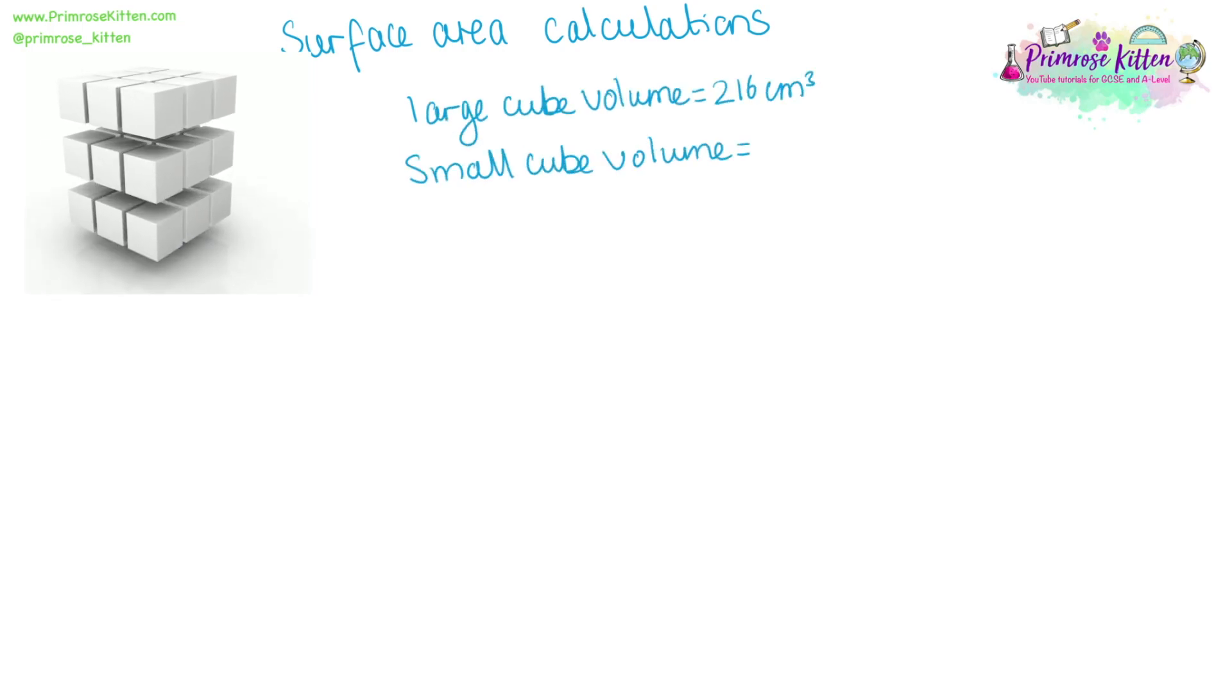Following on from that, we need to know surface area calculations as well. Just to remind ourselves, the large cube had a volume of 216 centimetres cubed, the small cube had a volume of eight centimetres cubed. When we think about a cube, if we lay it out flat, you can see that one cube actually has six faces each, and we need to use that and remember that in our calculations.